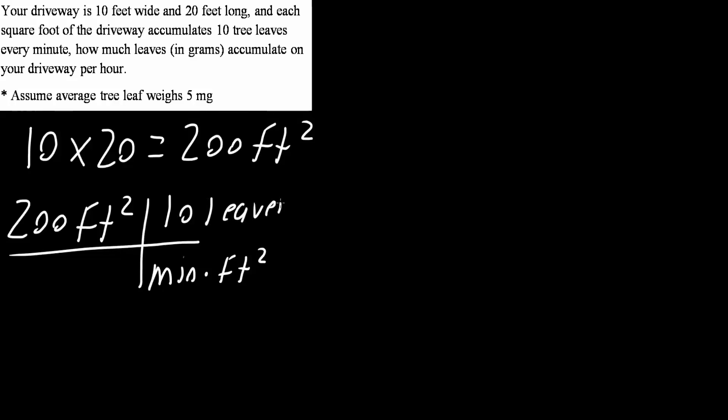Let's just double check that. So 10 tree leaves every minute per square foot. And so that gives us 2000 leaves per minute.